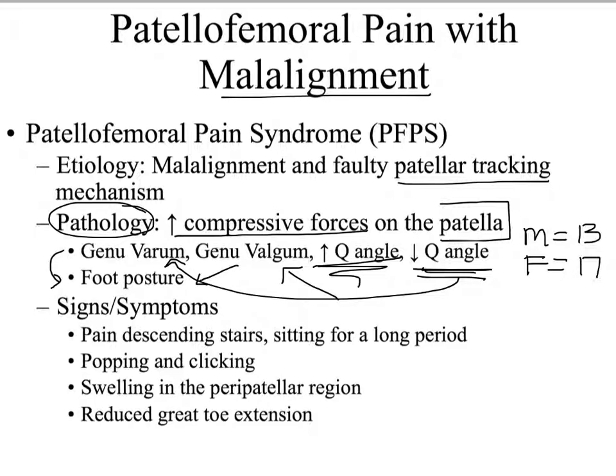We can see how one joint or set of bones could lead to alterations either up or down the kinetic chain — like the song says, the foot bone's connected to the knee bone, the knee bone's connected to the hip bone. They're all truly connected structures. When you have a malalignment somewhere within the patellofemoral joint, it's not surprising that a patient could present with anterior knee pain.